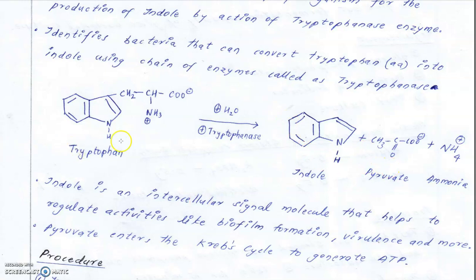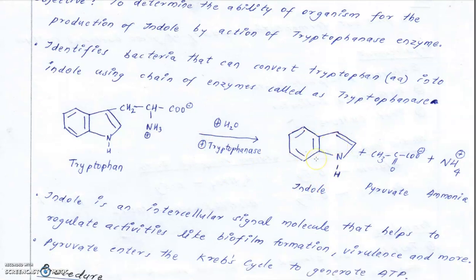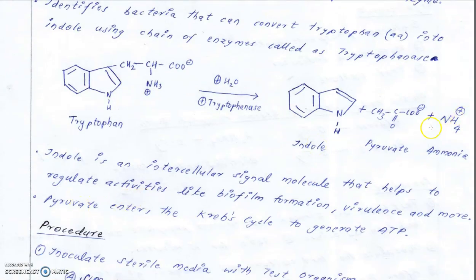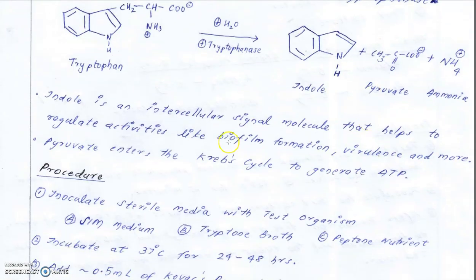Tryptophan is converted into indole, pyruvate, and ammonia by organisms having tryptophanase enzyme. Organisms with tryptophanase enzyme will give a positive indole test result. The pyruvate enters the Krebs cycle to generate ATP, and the ammonia is liberated inside the bacteria.